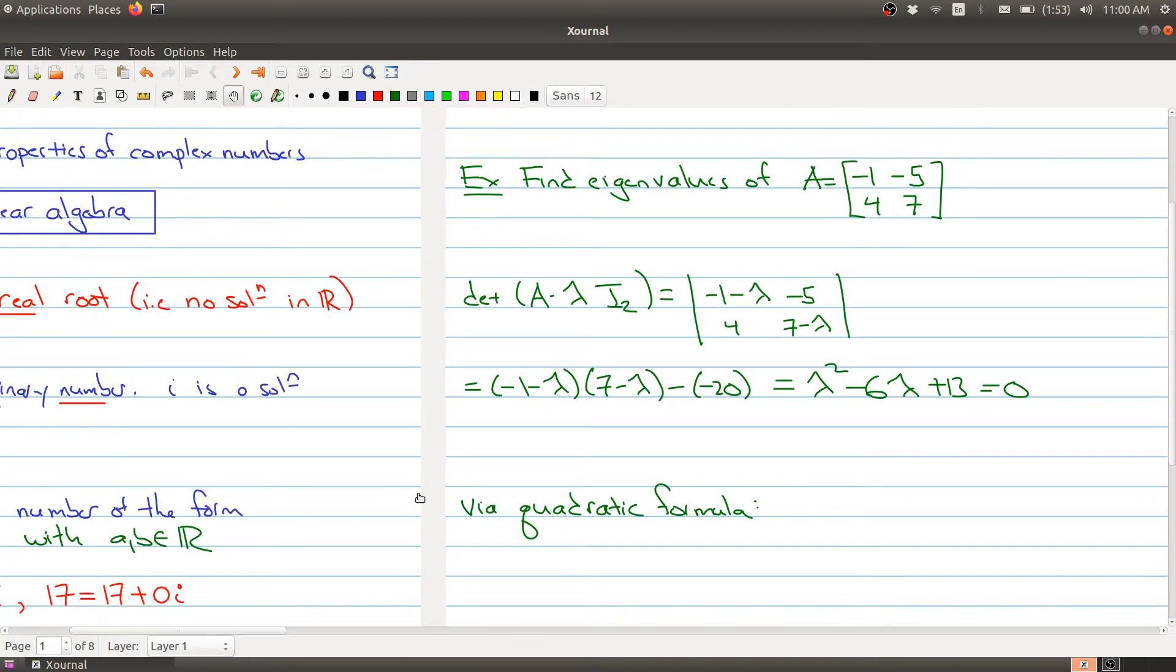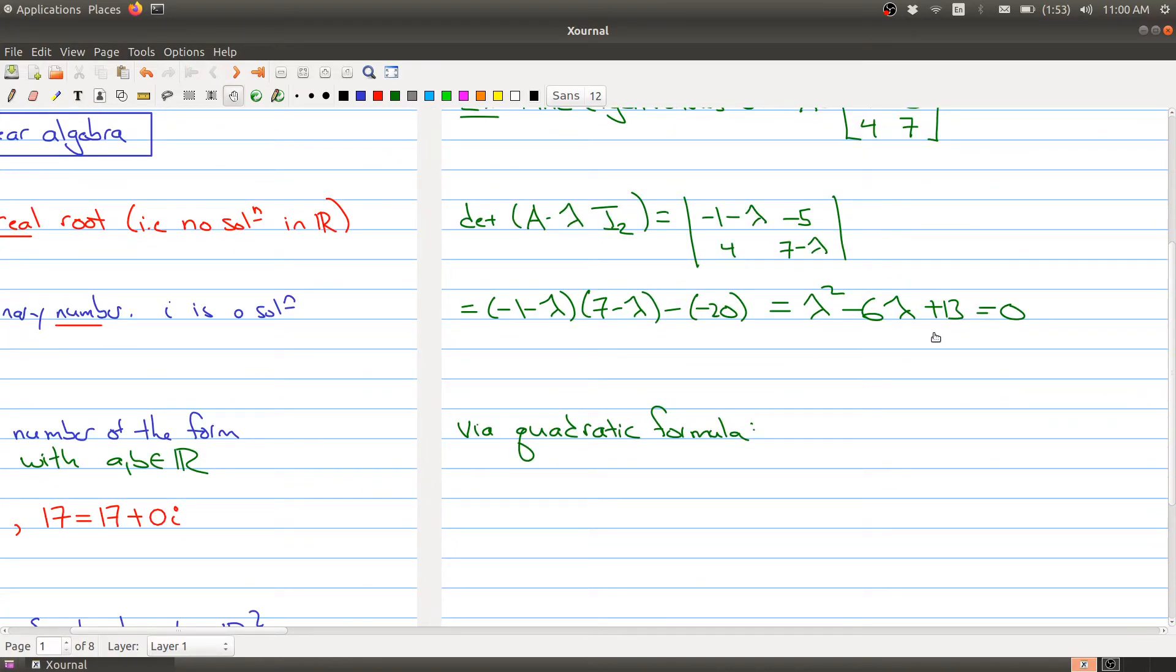I have a quadratic equation. We know how to solve quadratic equations with the quadratic formula. Lambda equals 6 plus or minus the square root of (-6) squared minus 4 times 13, all over 2. Inside here we get 6 plus or minus the square root of 36 minus 52, all over 2, which simplifies to 6 plus or minus the square root of -16 over 2.